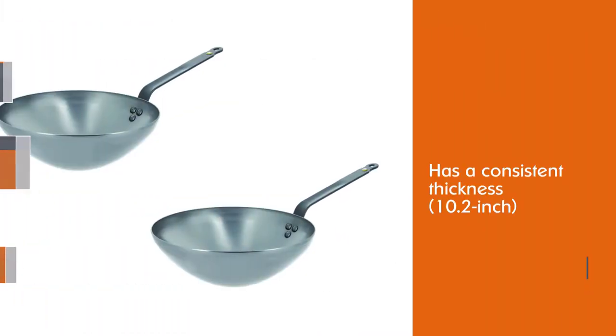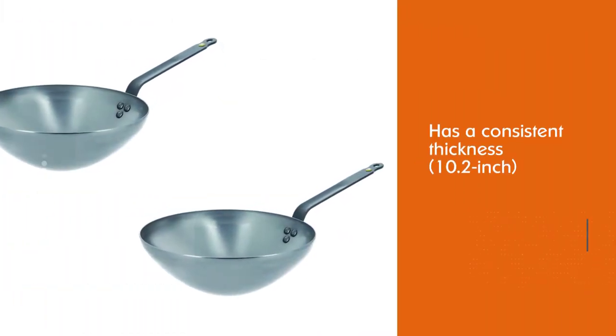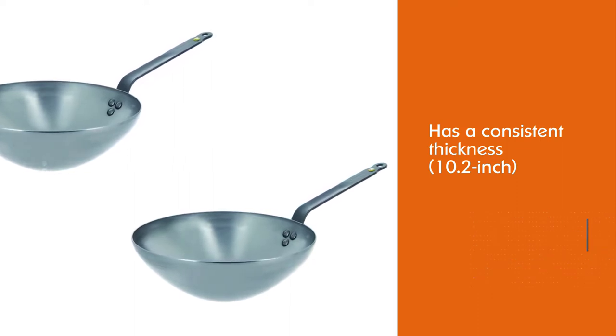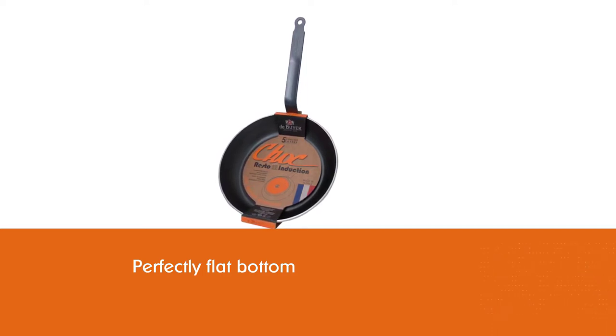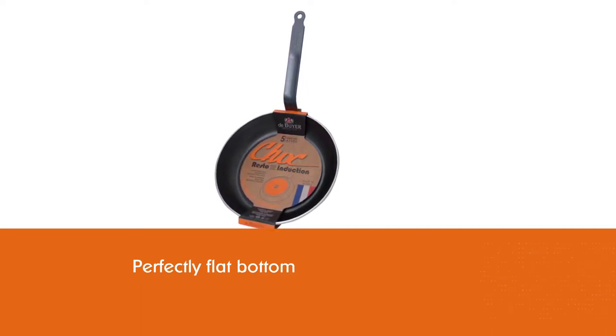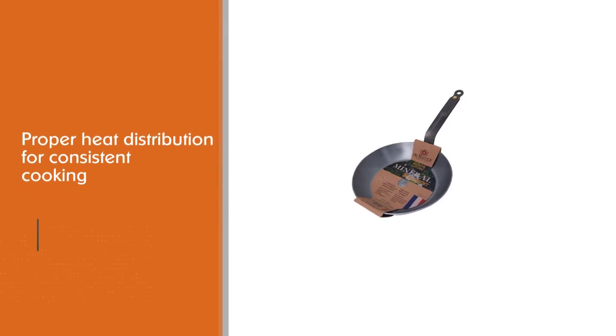Number one, most popular: the de Buyer Mineral B frying pan. French manufacturer de Buyer has been making professional cookware since 1830. Their 10.2 inch pan has a consistent thickness and a perfectly flat bottom that provides even heat distribution for consistent cooking.